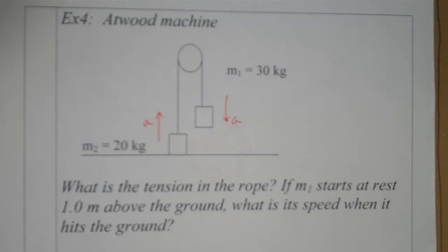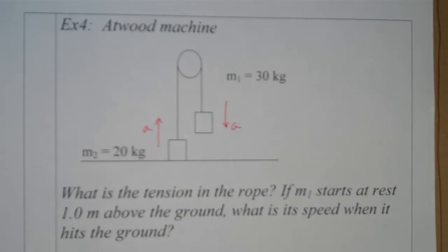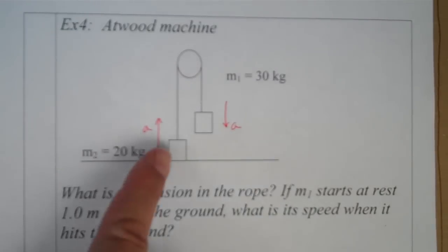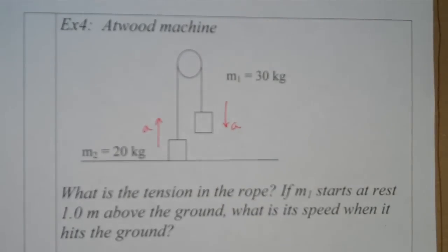For our next example, we're going to do the Atwood machine. This is the lab that you're going to actually do, I believe, the fifth week. We have a mass of 20 kilograms, a mass of 30 kilograms, and they're connected by a continuous rope, so the tension is the same all the way through, and the pulley system here is going to merely change the direction of motion.